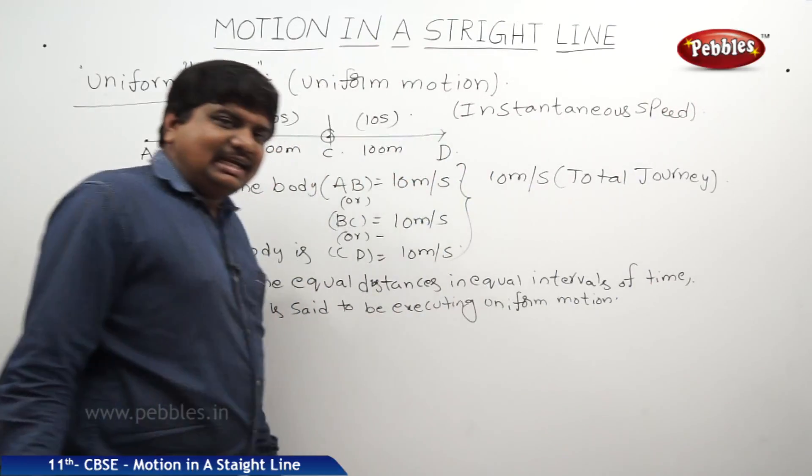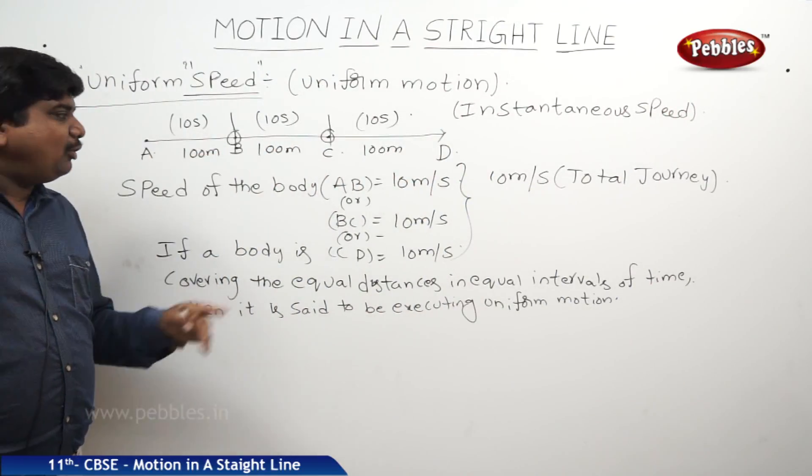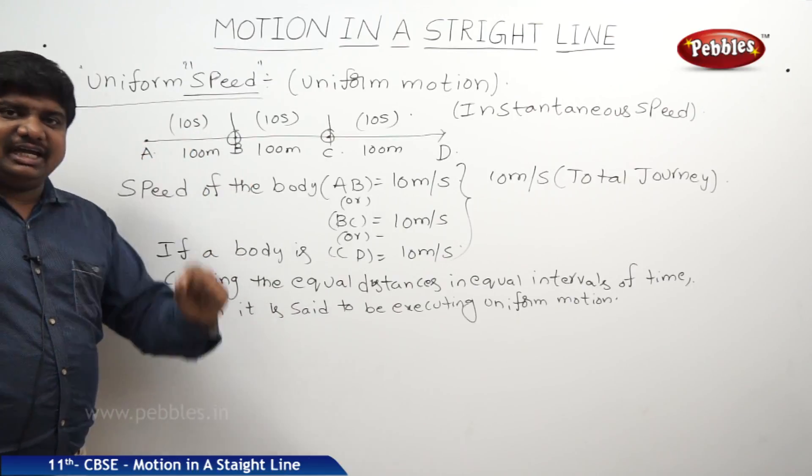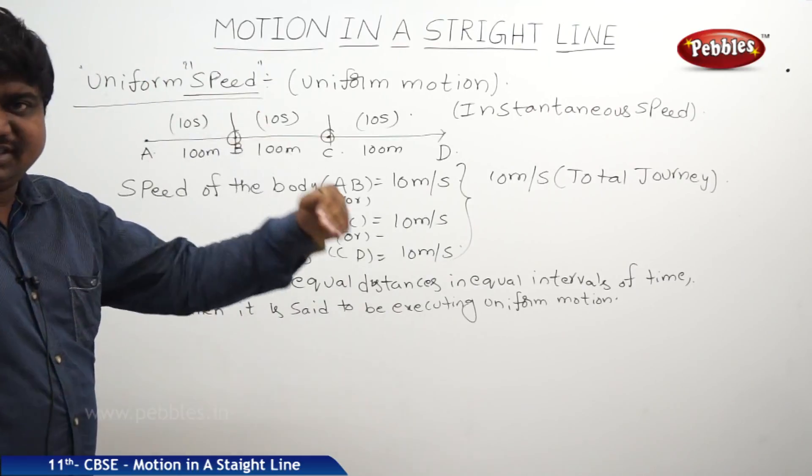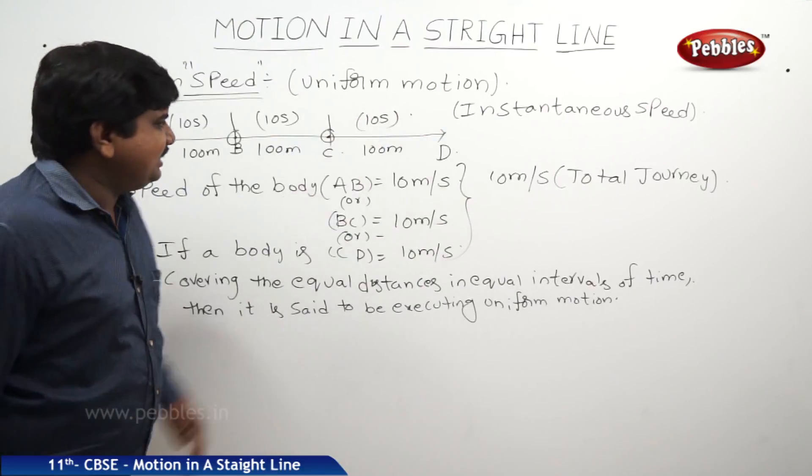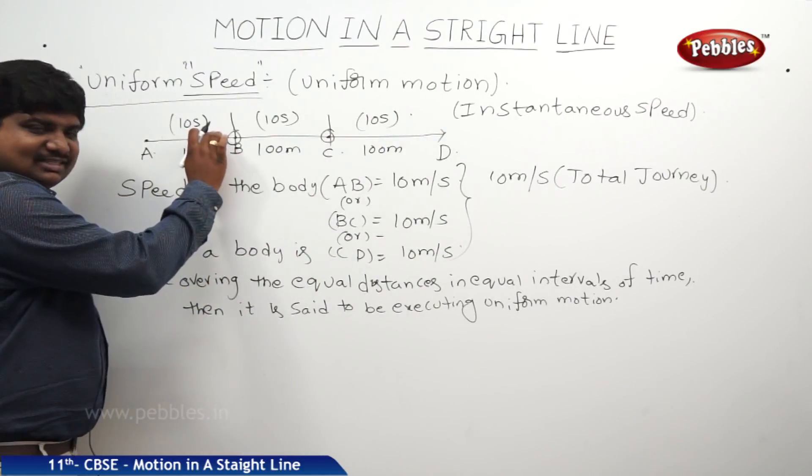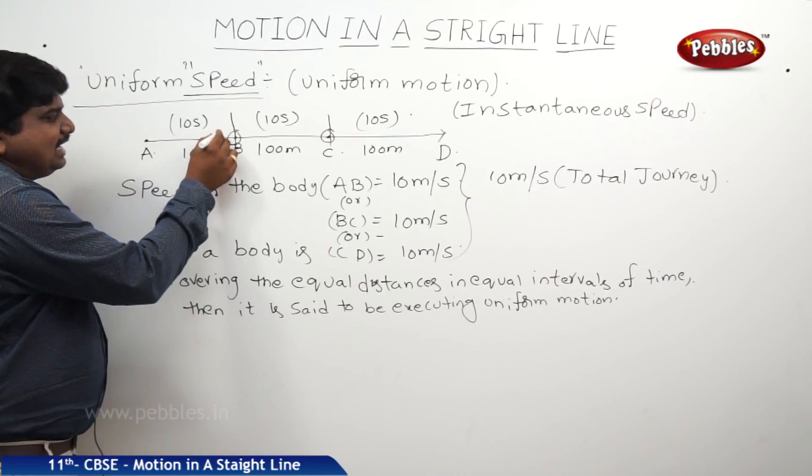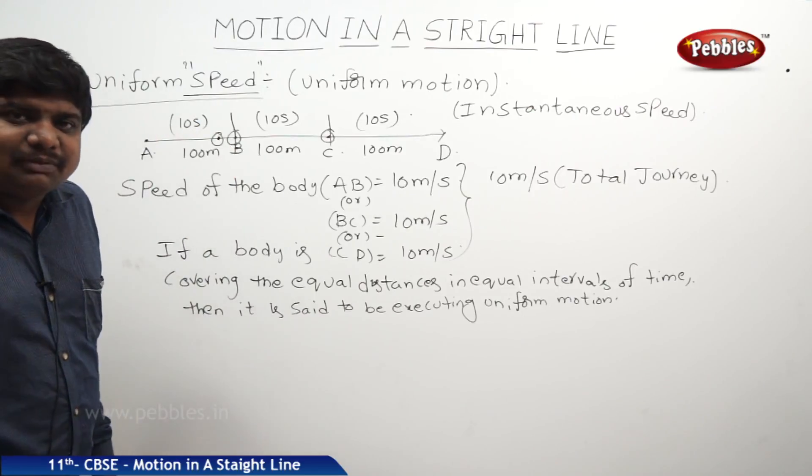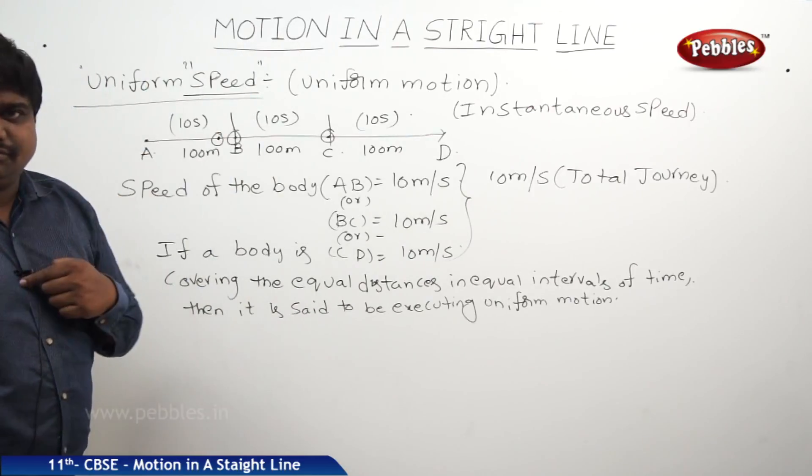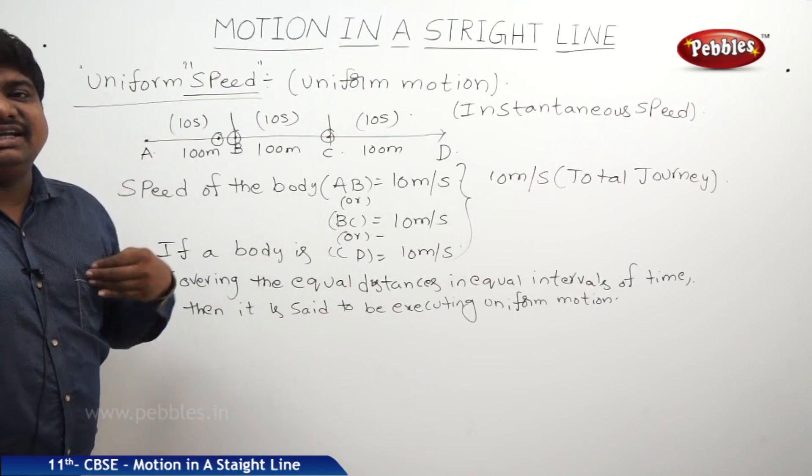So instantaneous speed is defined as the speed of the body at a given particular time, means right now we will say usually. So instantaneous speed, let us take it is a 10 seconds time to cover the 100 meters. At 9th second or at 90th meter point, what is the speed of the body? That is said to be instantaneous speed.